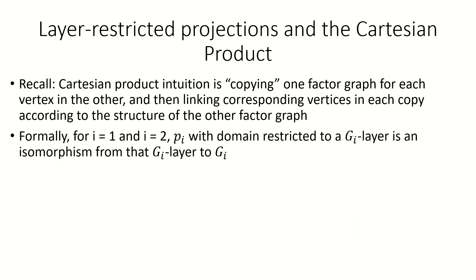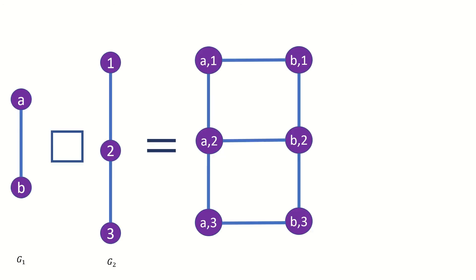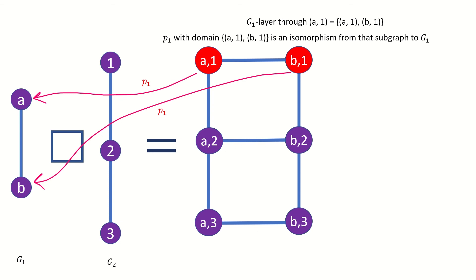For the Cartesian product, the projection function p sub i with domain restricted to any g sub i layer in the product is an isomorphism from that g sub i layer to the factor g sub i. For example, in this Cartesian product, if we take the g sub 1 layer through a1 and compare it to the structure of graph g sub 1, we see that the projection function p sub 1 is an isomorphism from this g sub 1 layer to g sub 1.